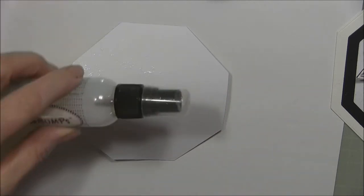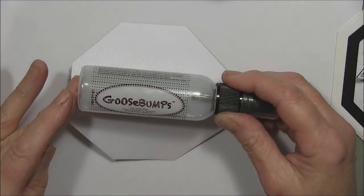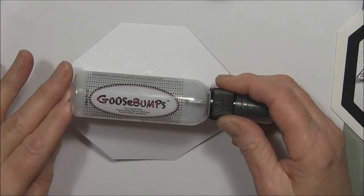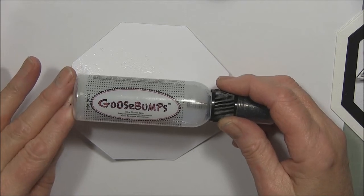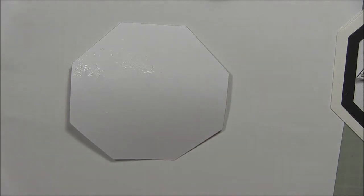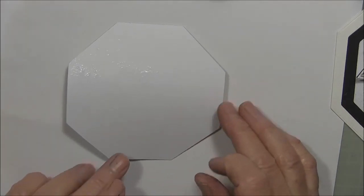So before we put the paints on, I've used Goosebumps Clear Texture Spray. They do do others. You've got a matte one and there's a pearlized one, a tinted one, but I like the Clear Texture Spray and that's what I've used. It acts as a sort of resist.